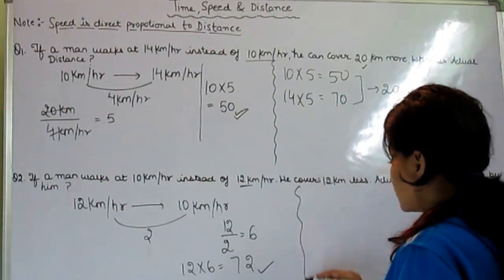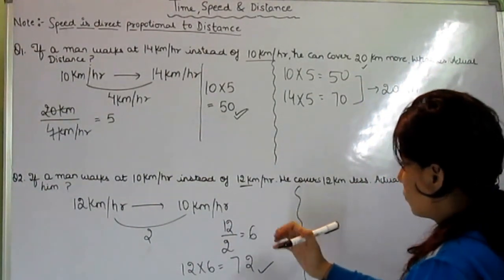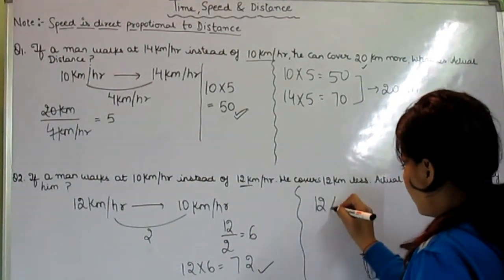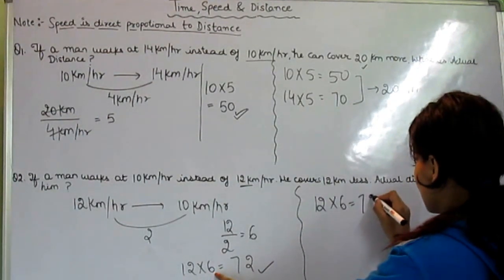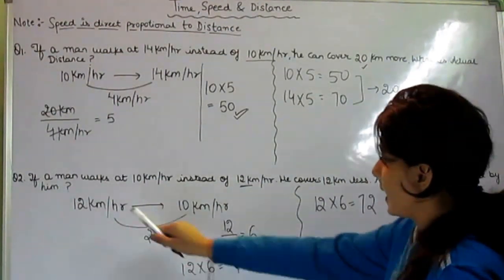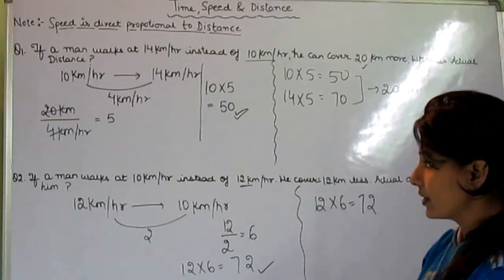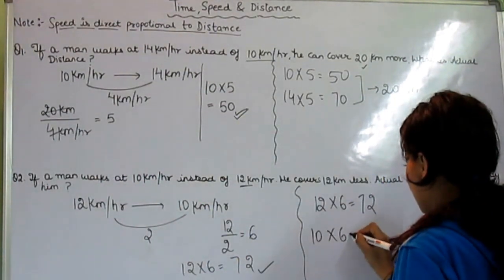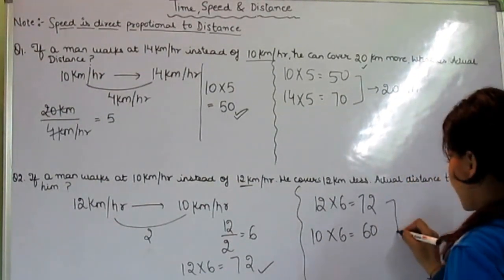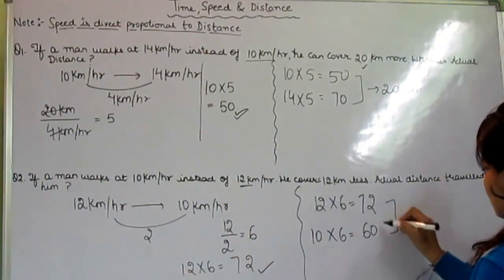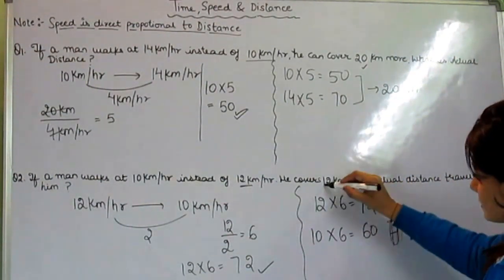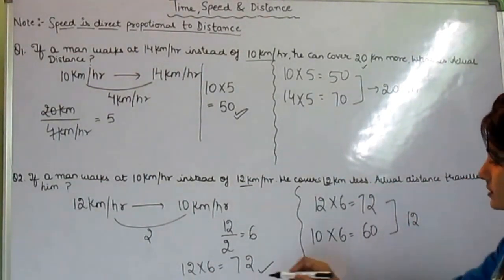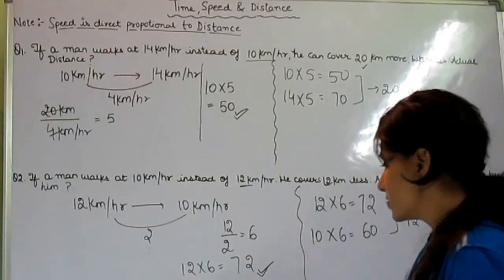Let's check it out again. When he goes with the speed of, what is his actual speed? That is 12 times 6, which is 72. And what is the speed when he is walking? That is 10 times 6, which is 60. What is the gap? How much less? 12. And this is given. So the answer is absolutely right and 72 is the answer.